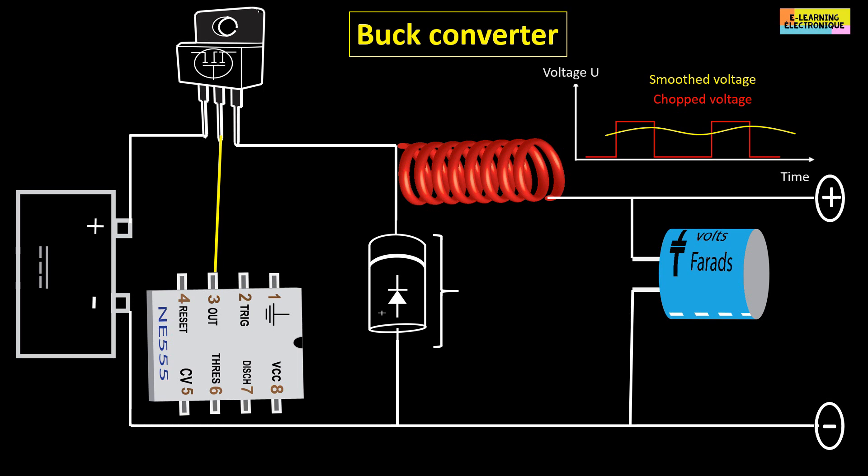In this configuration, the diode is called freewheeling diode or flyback diode. As a characteristic, this diode must be fast such Schottky type or ultra-fast recovery. Its reverse voltage must be at least equal to the input power supply and it must be able to support the output current.